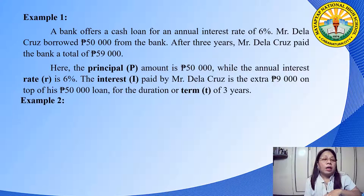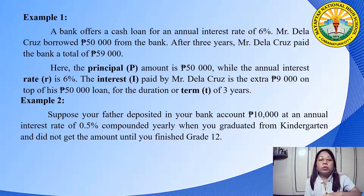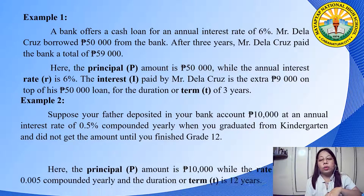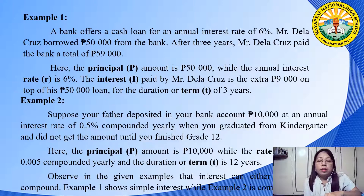For example two, suppose your father deposited 10,000 pesos in your bank account at an annual interest rate of 0.5%, compounded yearly, when you graduated from kindergarten, and you did not withdraw the amount until you finished Grade 12. Here, the principal is 10,000 pesos, the rate of interest is 0.005 compounded yearly, and the term is 12 years. Observe that interest can be either simple or compounded. Example one shows simple interest, while example two shows compound interest.